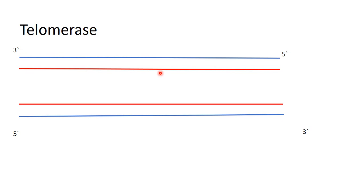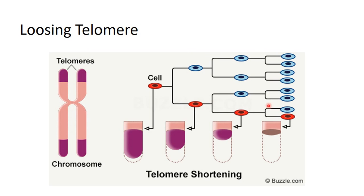This is how the telomerase solves the end replication problem. However, telomerase does not always exist in sufficient amounts in human cells, so DNA shortening does happen sometimes during a human life. Each time the cell is dividing, there is some telomere shortening — maybe not on all chromosomes, but there is DNA or telomere shortening when cells are dividing.